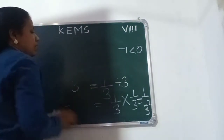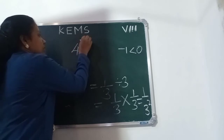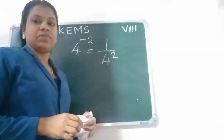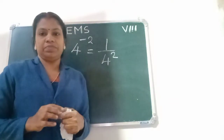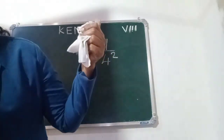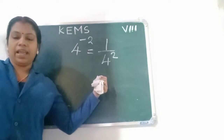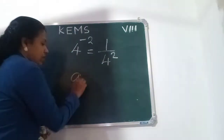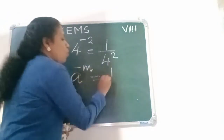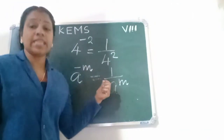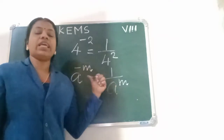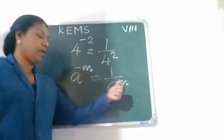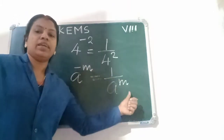Like 4 raised to minus 2 equals 1 by 4 raised to 2. In general, for any non-zero integer A: A power minus M equals 1 by A raised to M. Negative power becomes 1 by A power M.